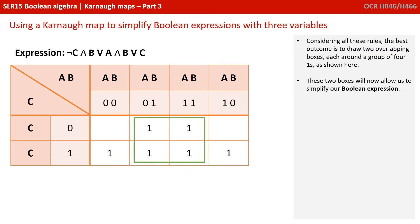So, considering all these rules, the best outcome is to draw two overlapping boxes, each around a group of 4 1s, as shown here. These two boxes will now allow us to simplify our Boolean expression.